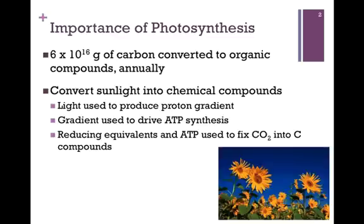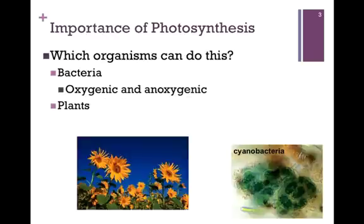The energy of light is captured and used to produce a proton gradient, very similar to the process of electron transport that we examined in Chapter 15. This proton gradient is then used to drive ATP synthesis, just as in oxidative phosphorylation. The reducing equivalents and ATP generated through the light reactions of photosynthesis are then used to fix carbon dioxide gas into chemical carbon compounds.